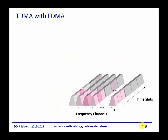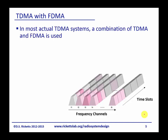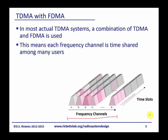In many systems we can actually combine both time division and frequency division multiple access. We split our total channel bandwidth into a set of frequency channels, and then do time division multiplexing as we move along in time. This means each frequency channel is shared between multiple users, and there are multiple frequency channels being used at the same time. As shown in the diagram, users are each one of these small blocks in the grid.